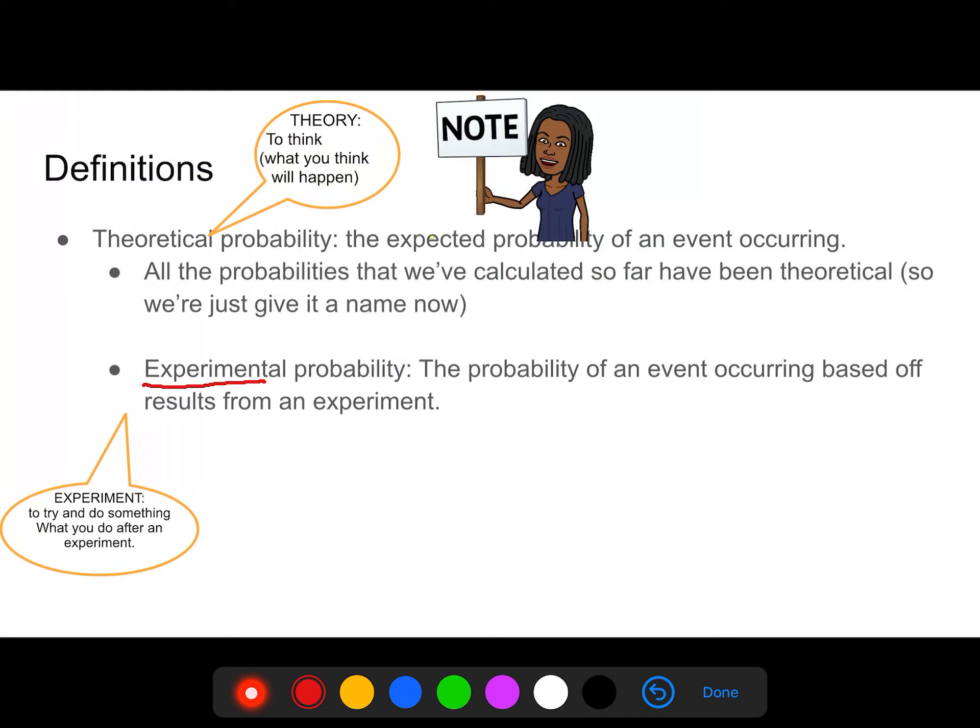With experimental probability, that root word being experiment, this is the probability of an event occurring based off of results. So that's when I'm actually taking that coin physically and conducting an experiment and doing maybe five trials to see how many times it actually land on heads. Please make sure this is written down.